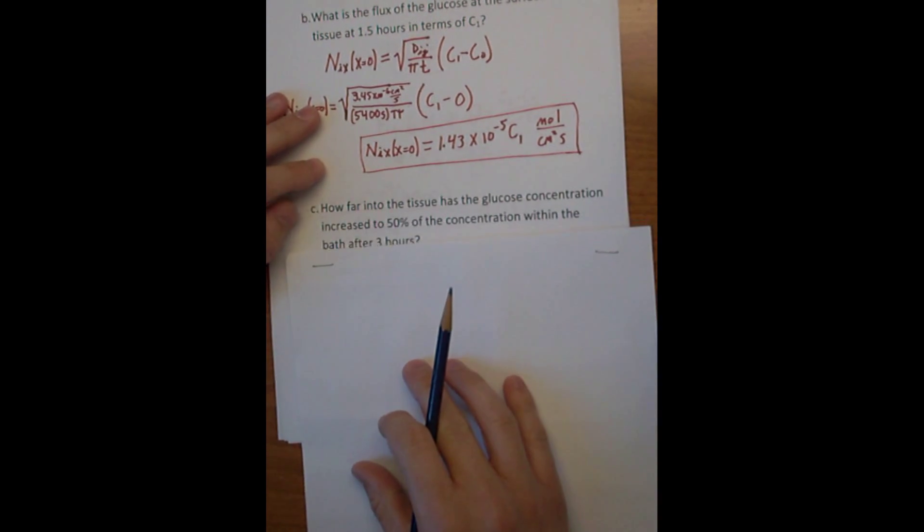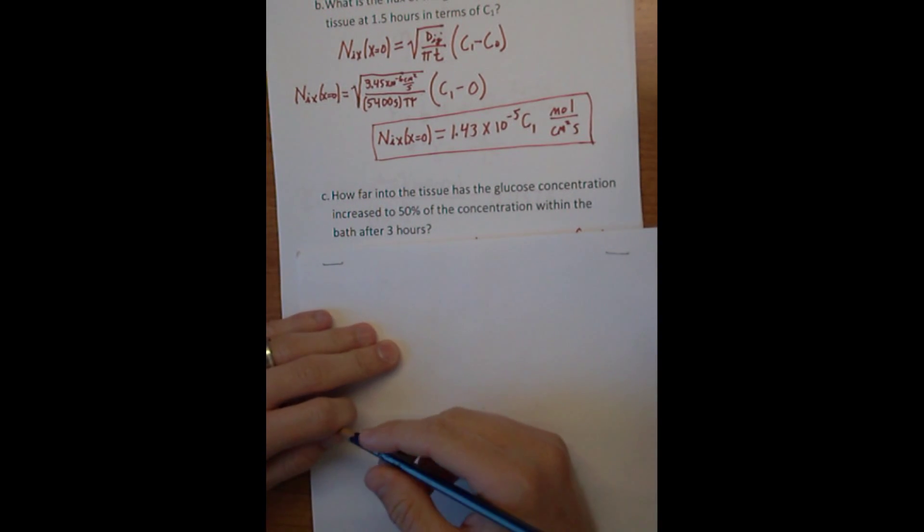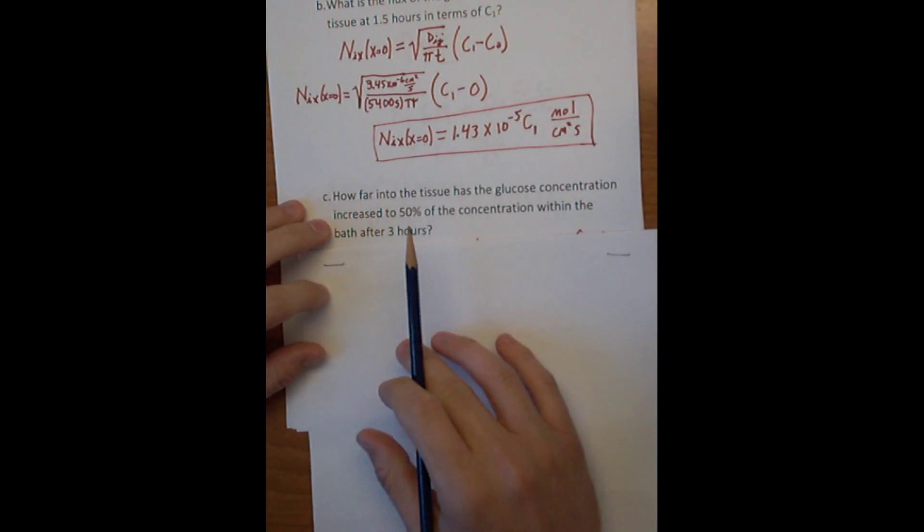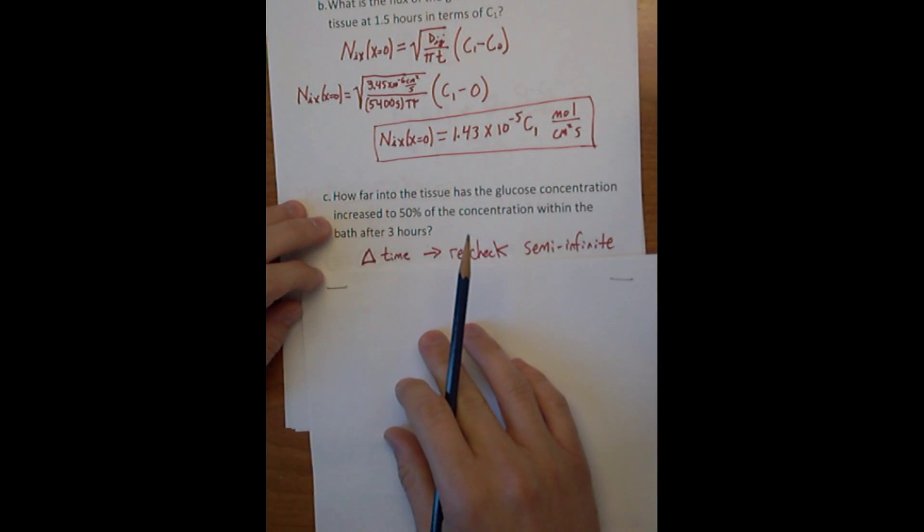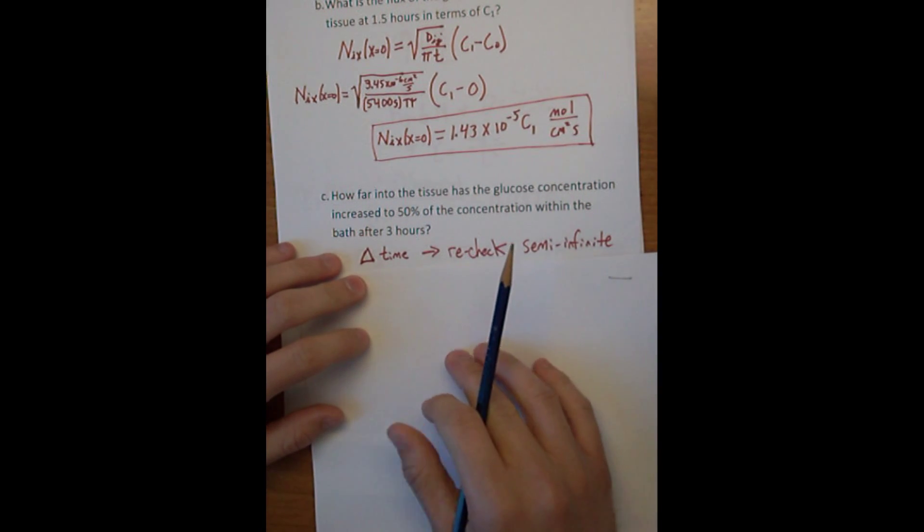Part C now asks a similar kind of question as part A: how far into the tissue has the glucose concentration increased to 50% of the concentration within the bath after three hours? Now the time has changed from an hour and a half to three hours, so we need to recheck if the semi-infinite approximation applies.